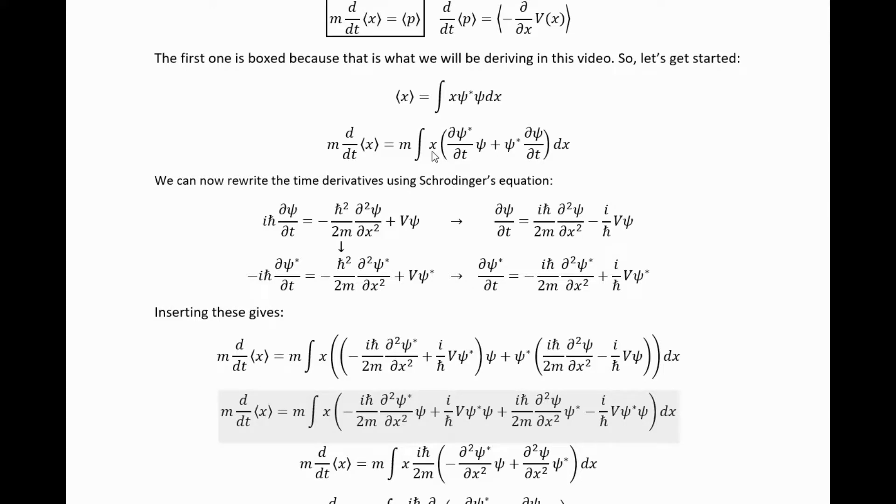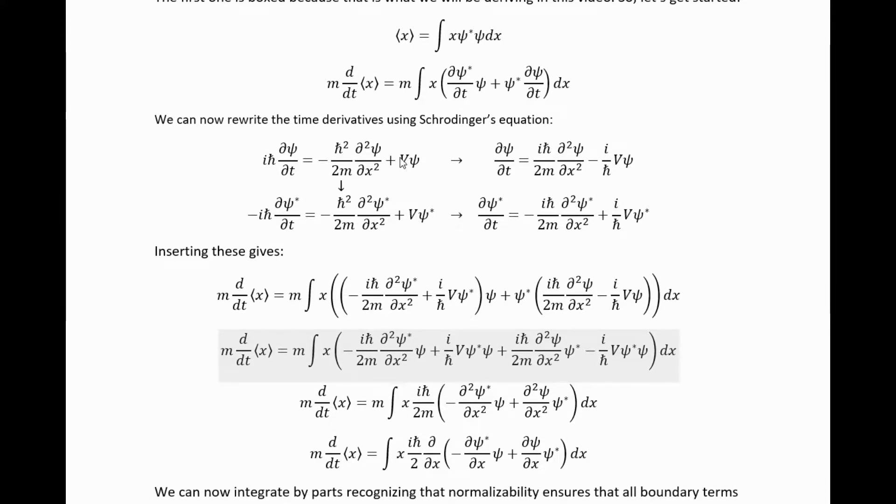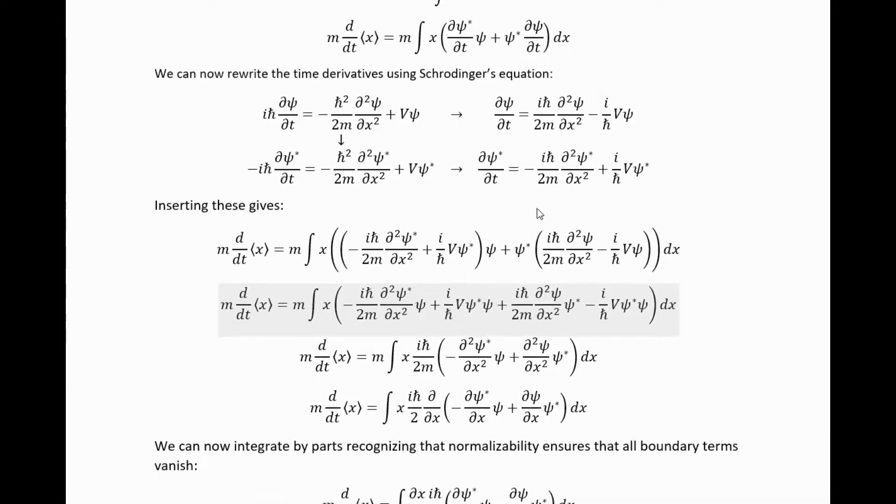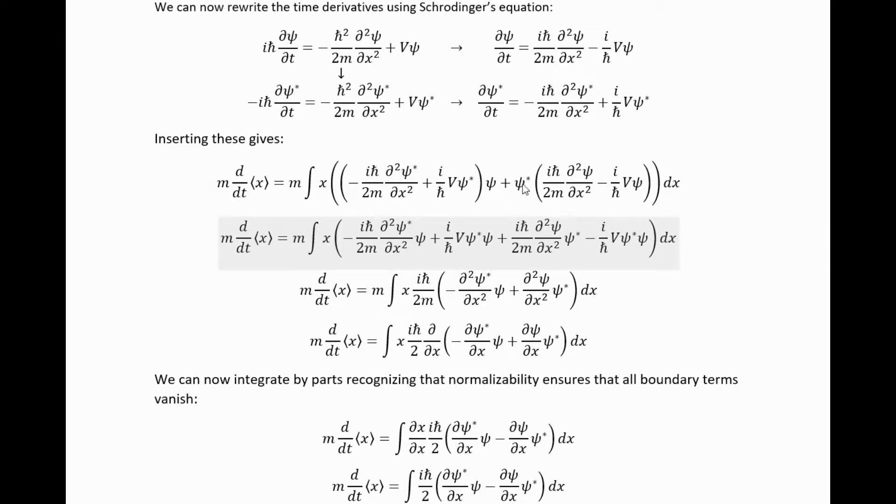The first step is simply to bring this derivative in the integral, in which case it becomes a partial derivative, and then we can use the product rule on the wave functions we find there, and that gets us here. Then we can rewrite these time derivatives using the Schrödinger equation. So if we complex conjugate the Schrödinger equation, we get this. Then we can solve for the time derivatives for both the Schrödinger equation and its complex conjugate. If we insert these, we arrive immediately at this.